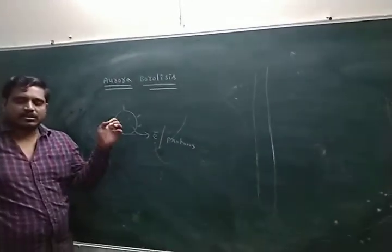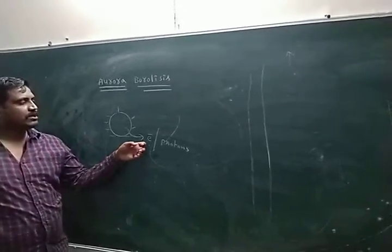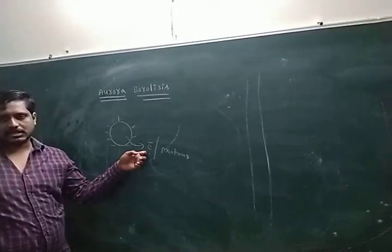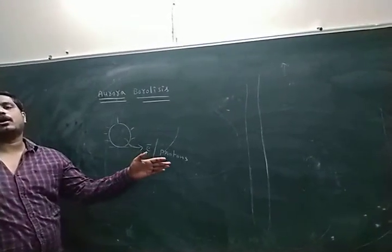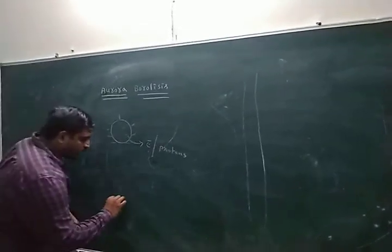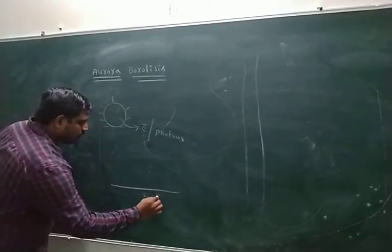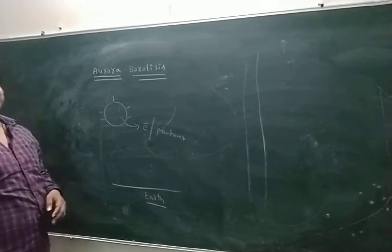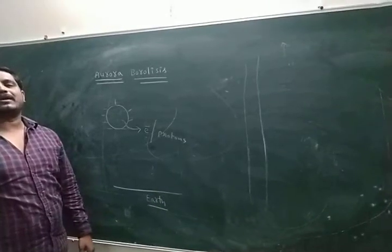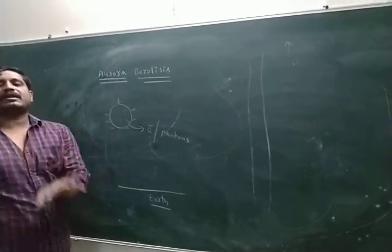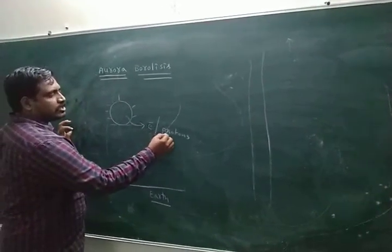Once again, the sun emits light simultaneously. It also emits charged particles like electrons, gamma particles, protons, and so on. According to Earth, Earth has geomagnetism — simply, Earth acts as a huge magnet. It is because of Earth's magnetism acting on these charged particles.